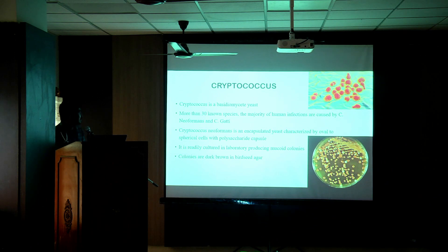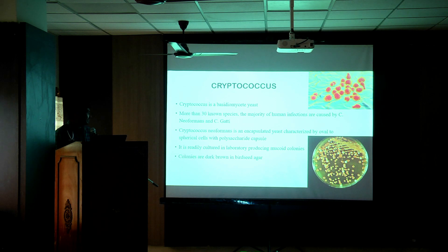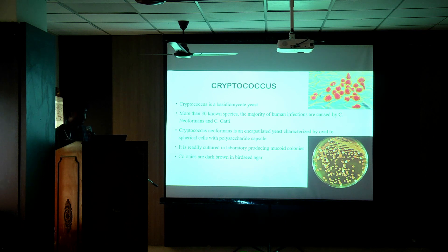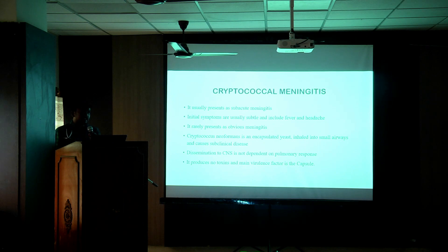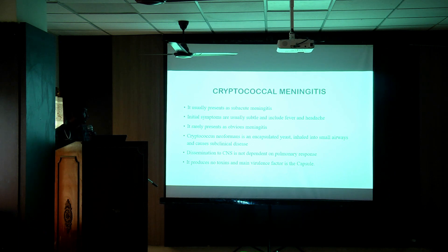Moving on to cryptococcus: it is a Basidiomycetes yeast. More than 30 known species have been identified, but the majority of human infections are caused by Cryptococcus neoformans and Cryptococcus gattii. Cryptococcus neoformans is a spherical yeast surrounded by a polysaccharide capsule, which is the main virulence factor. It can be cultured in the laboratory and classically produces dark brown colonies on bird seed agar. Cryptococcal meningitis usually presents as subacute meningitis, with very subtle symptoms in the form of fever or headache, and it rarely presents as obvious meningitis with typical meningeal signs.